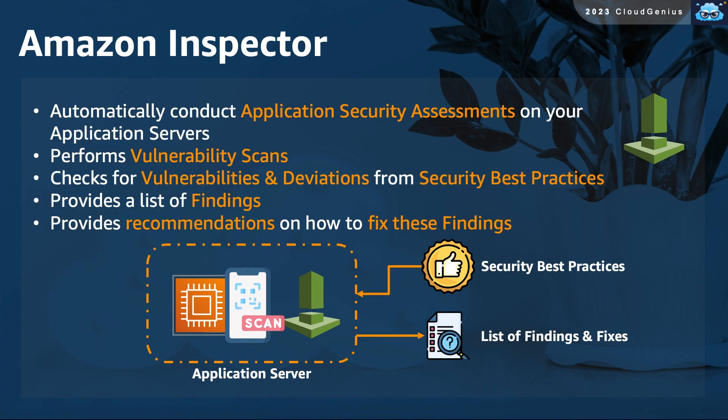The last service to mention in this video is Amazon Inspector. Your customer would like to check if their application server has any open unwanted network ports, or even software packages that are not needed and could be a security threat. In other words, your customer wants to make a vulnerability scan for their server and check for any deviations against security best practices. Inspector can do that — it can conduct automated application security assessments and provide a list of security findings, and even recommendations on what is needed to fix issues and comply with best practices.